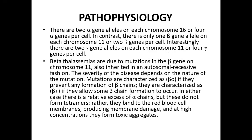There are two alpha gene alleles on each chromosome 16, giving four alpha genes per cell. In contrast, there is only one beta gene allele on each chromosome 11, giving two beta genes per cell. Interestingly, there are two gamma gene alleles on each chromosome 11, giving four gamma genes per cell.